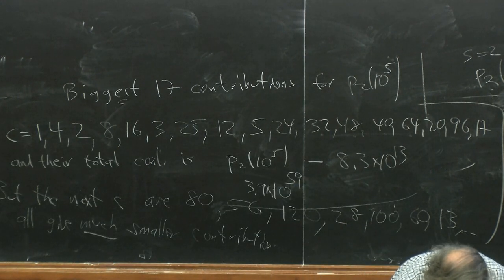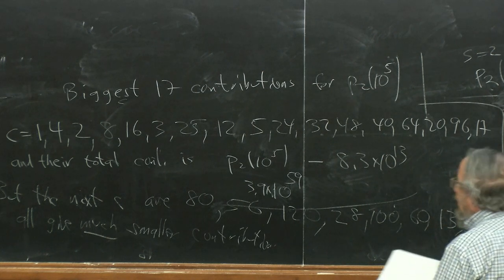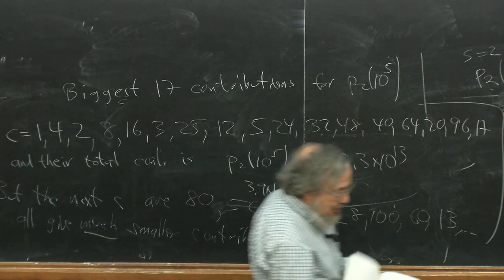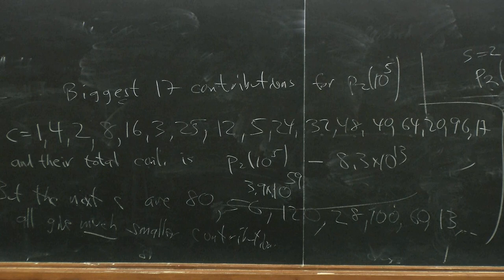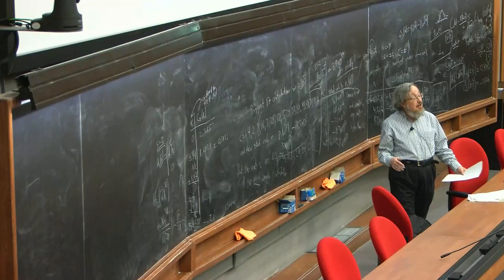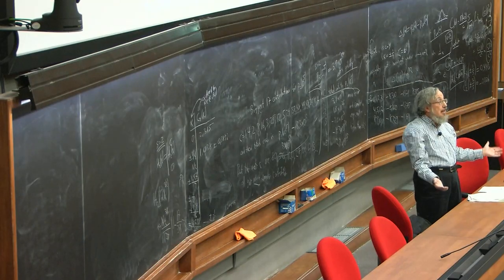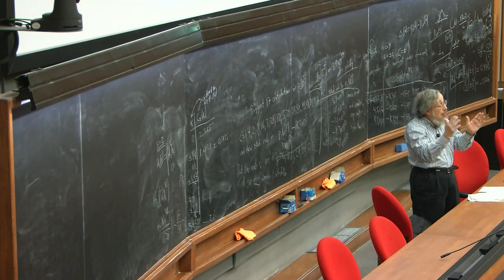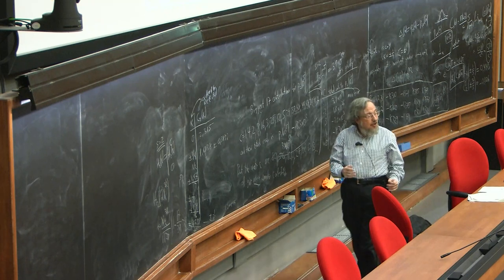One possibility is a numerical error in the calculations, though everything has been checked multiple times. Another possibility is that the theory is simply incomplete: what's called the 'minor arcs' contribution — the parts of the circle not covered by major arcs around rational numbers of small denominator — may not be negligible here, unlike in the classical s=1 case.